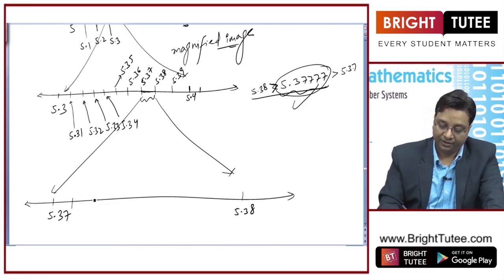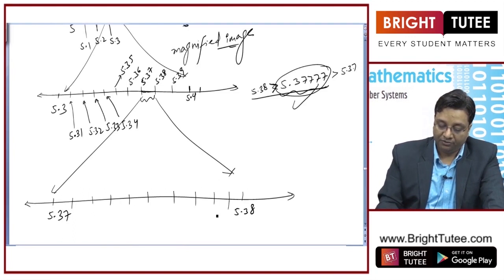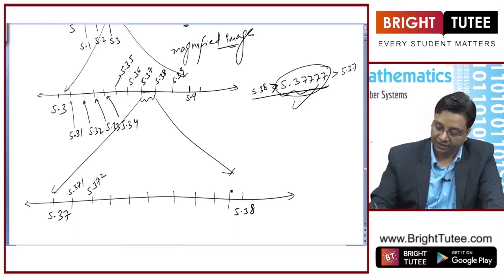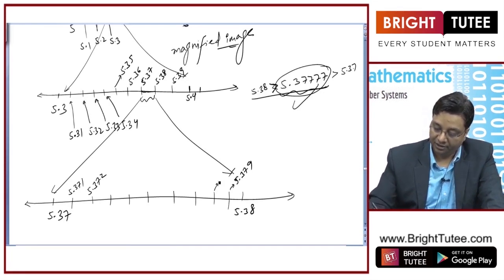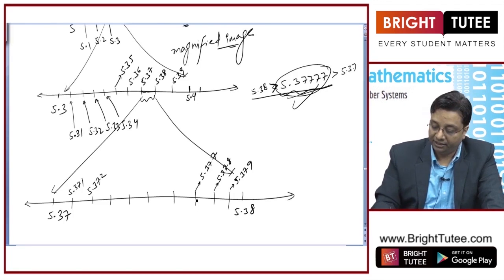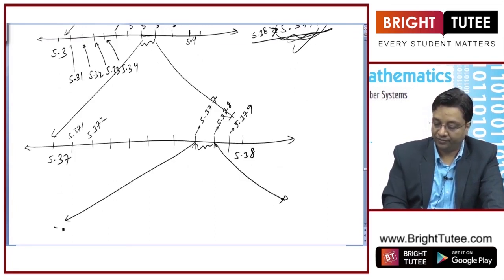I will divide the gap between 5.37 and 5.38 into 10 equal parts: 1, 2, 3, 4, 5, 6, 7, 8, 9, and 10. The number 5.3777 is greater than 5.377 but lesser than 5.378, so it lies in the gap between those two marks. I will magnify that gap next.